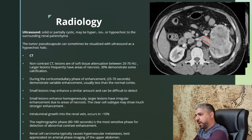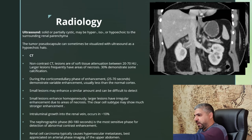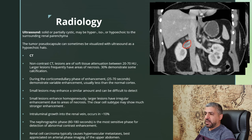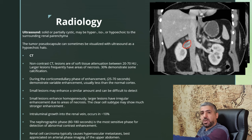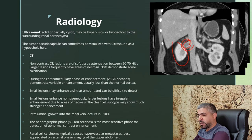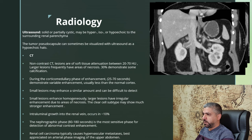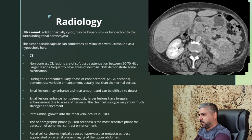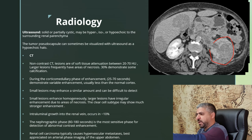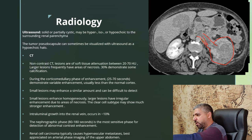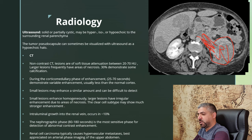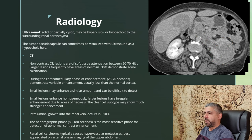Look at this example: there is a filling defect in the right renal vein. Is it enhancing? No — confirming this is a bland thrombus, not a tumor thrombus, and carrying a better prognosis. In another case, a large mass almost replacing the left kidney extends into the renal vein, showing heterogeneous post-contrast enhancement just like the rest of the tumor, confirming tumor thrombus. Additionally, liver lesions visible here are confirmed metastases from renal cell carcinoma.